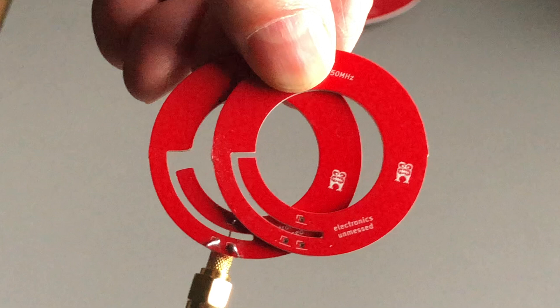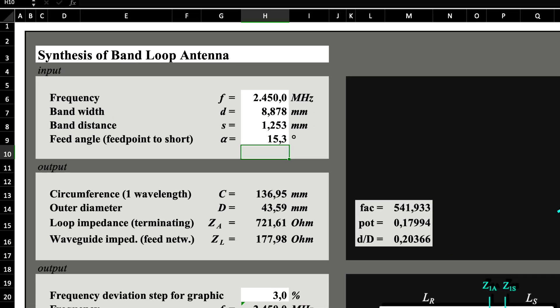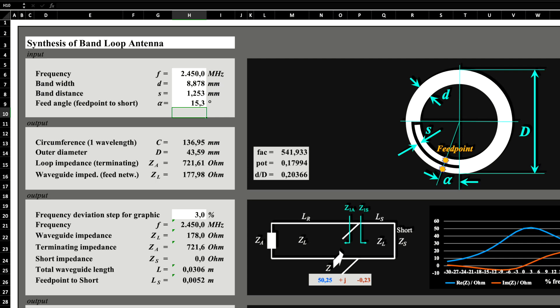You can tune it, then the impedance matching is then still good, but not perfect. With the measurement results, we can further improve our Excel tool, so that this type of PCB antenna can be dimensioned exactly to the desired resonance frequency.